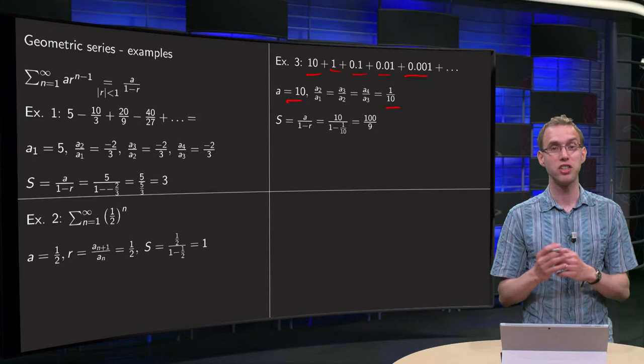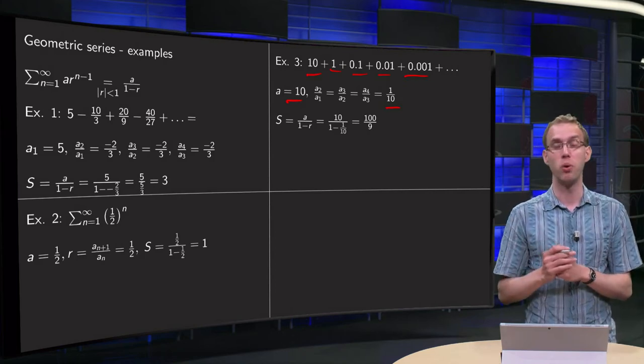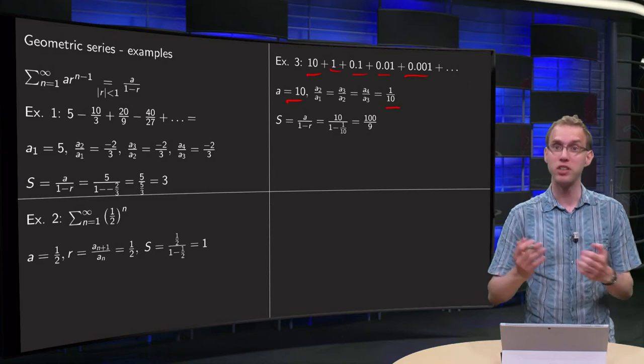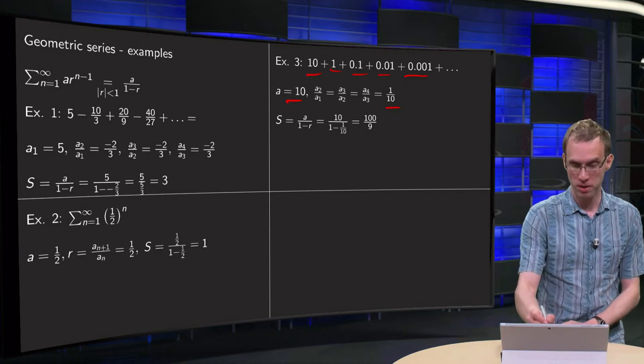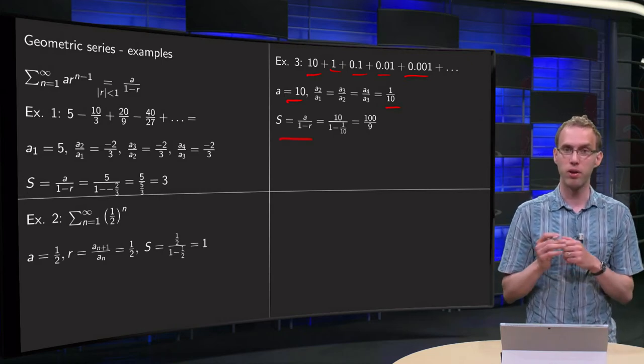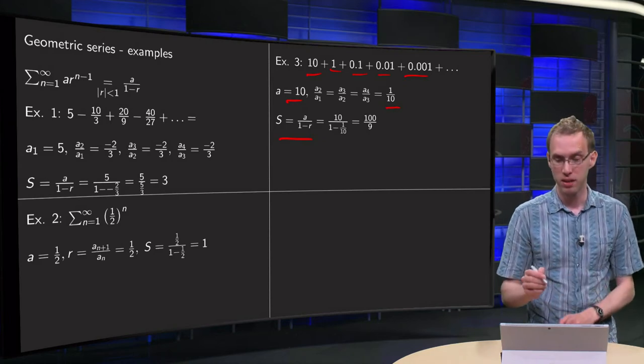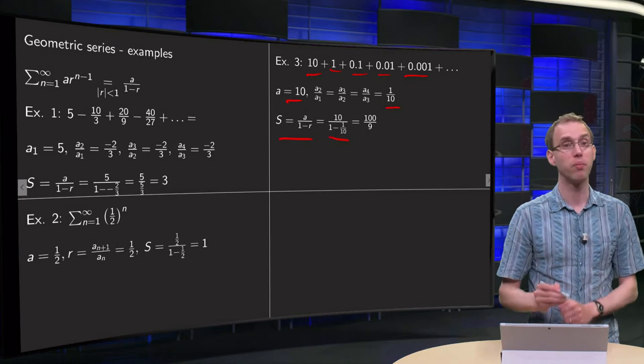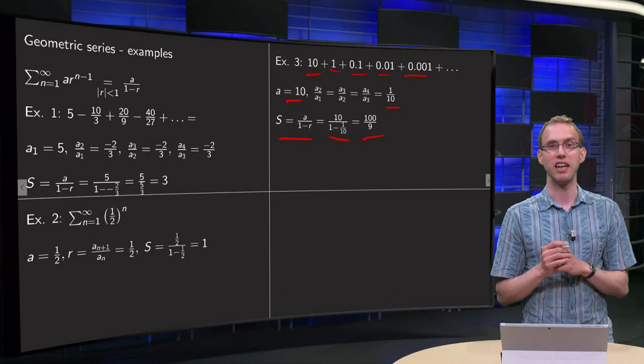so we have a geometric series here with a first term a equals 10 and a ratio 1 over 10. So we know this geometric series converges and we can compute the sum. That sum equals a divided by 1 minus r, equals 10 divided by 1 minus 1 tenth, equals 100 over 9. It is about 11 seconds.